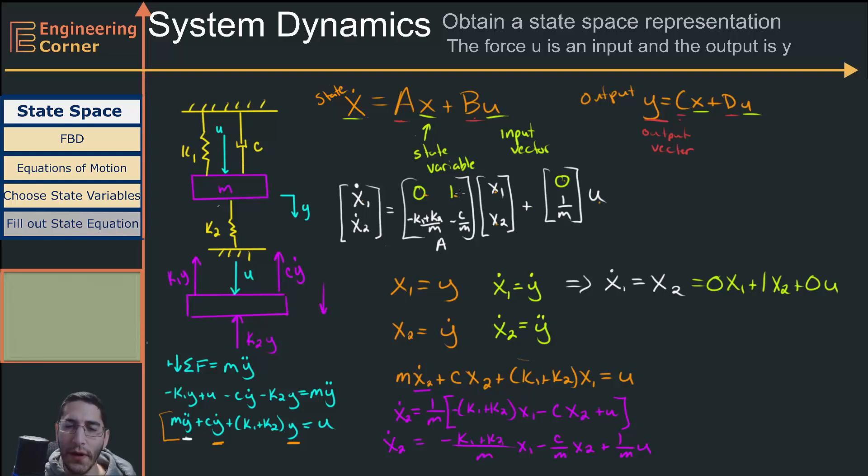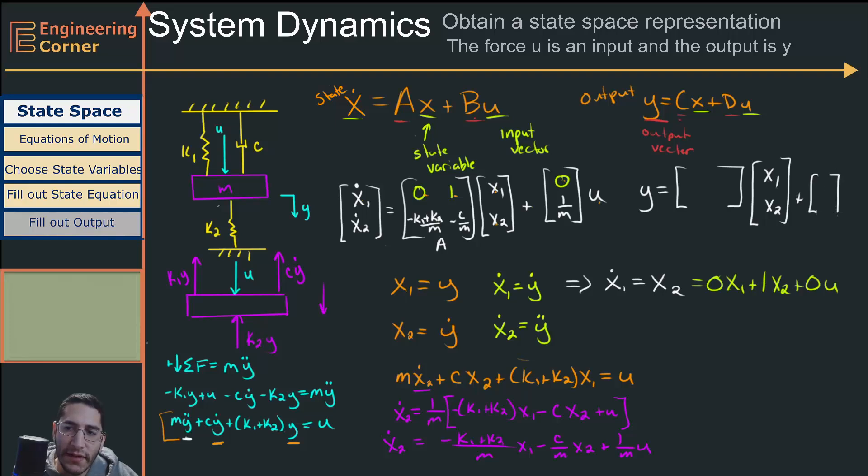So now that we've filled out our input, we now need to go to our output. And our output is going to be, well, we only have one output y. So y is going to equal some matrix C, and we know what x is. We know x is going to be x1, x2 plus some matrix D plus u, and we know u is just u.